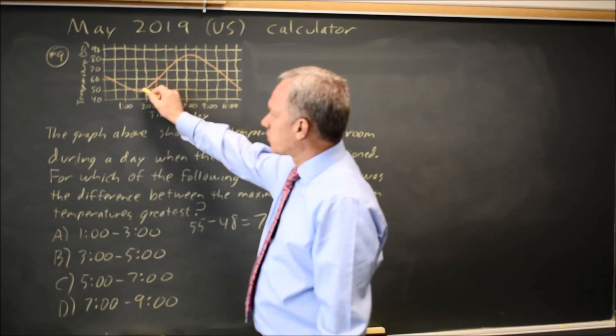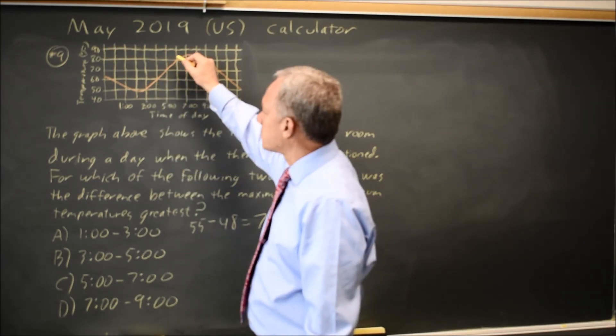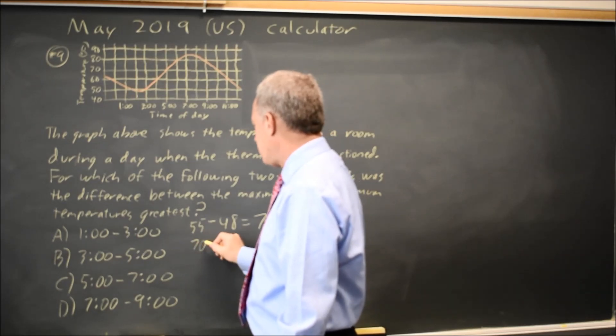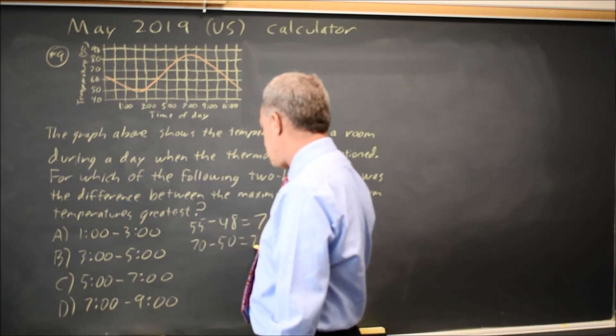From 3 to 5, the minimum temperature is at 3 o'clock when it's 50 degrees, the maximum is at 5 o'clock when it's 70 degrees, and 70 minus 50 is 20.